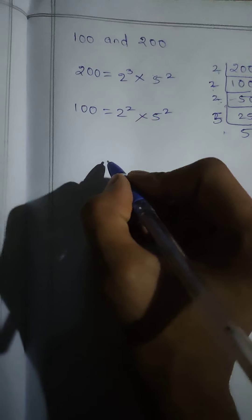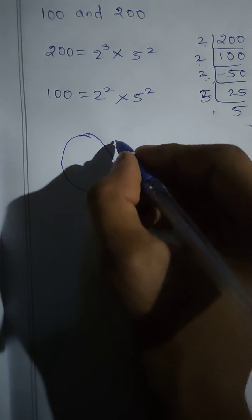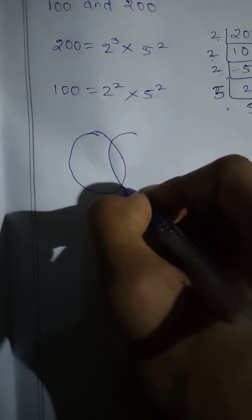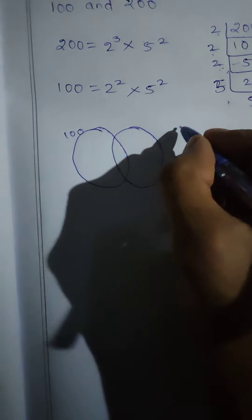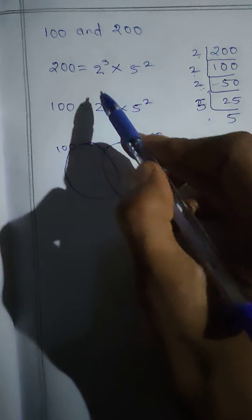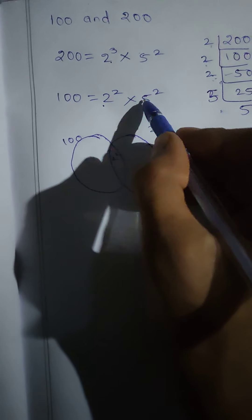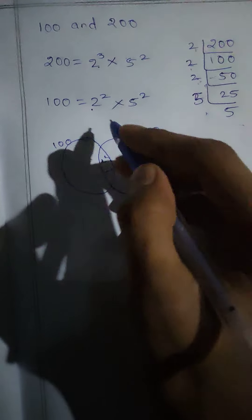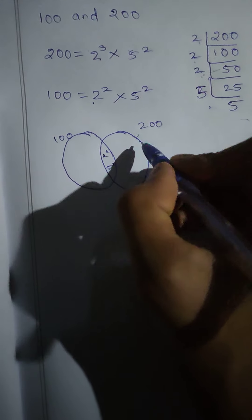Now draw both circles. This is the 100 circle and the 200 circle. Common numbers: 2 squared is common here, so we take 2 squared, and 5 squared is common here, 5 squared. We have one more 2 here because here it's 2 cubed in the 200 column.